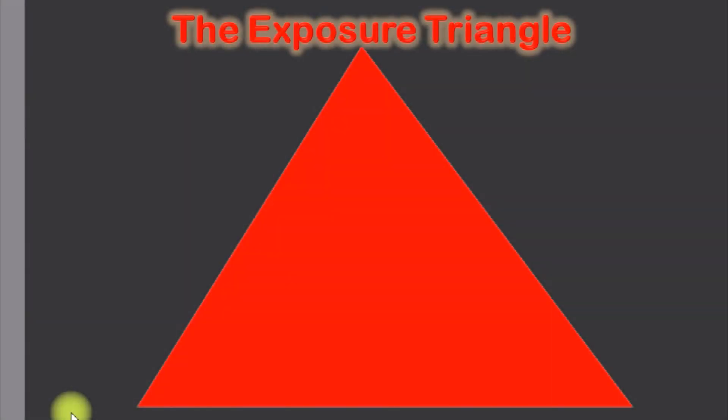Our first assignment is to use the camera's manual mode to take a properly exposed picture, and also to take one that's underexposed and overexposed. A properly exposed picture is simply one that's neither too light nor too dark.